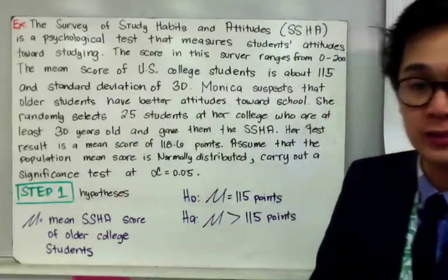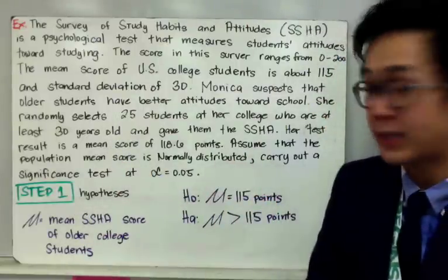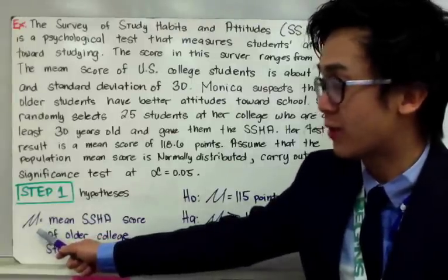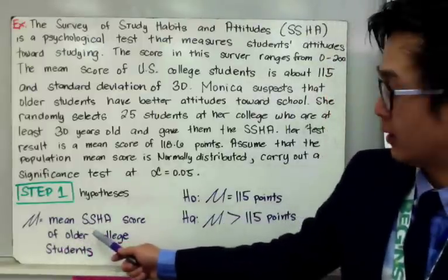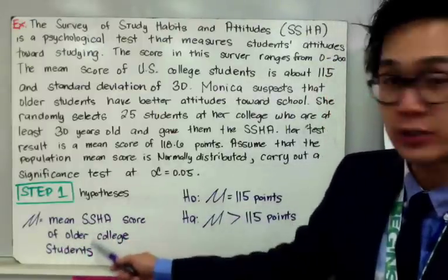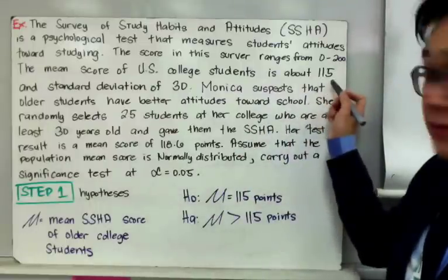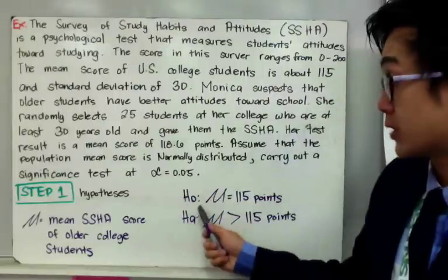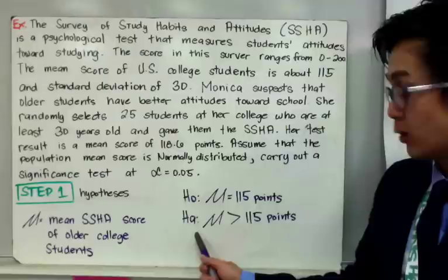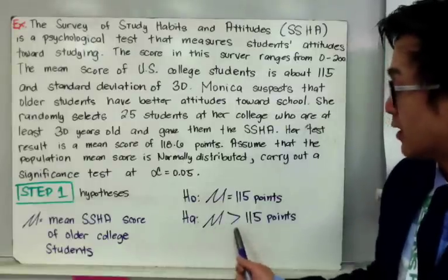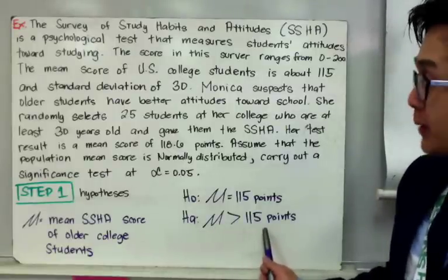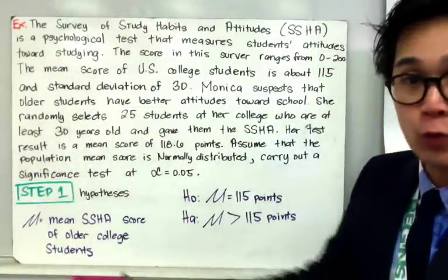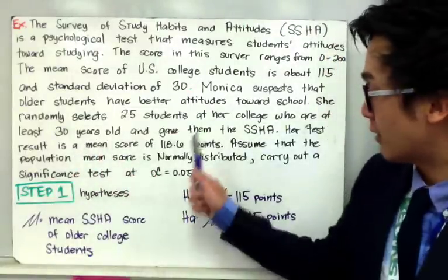The first step is to write your hypotheses. We know our parameter is mu, the mean SSHA score of older college students. Our null hypothesis is mu equal to 115 points. Our alternative hypothesis is mu greater than 115 points, because we are trying to test whether the mean score is higher for older students. These are our hypotheses.